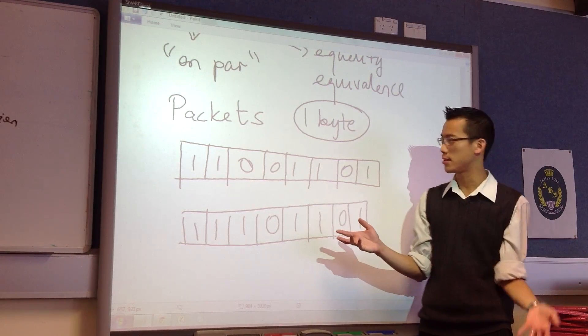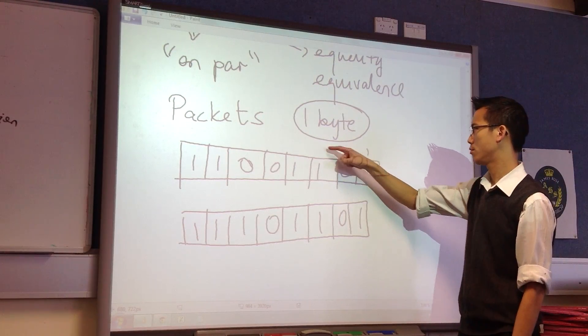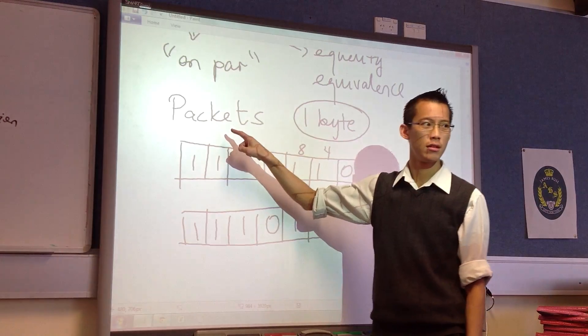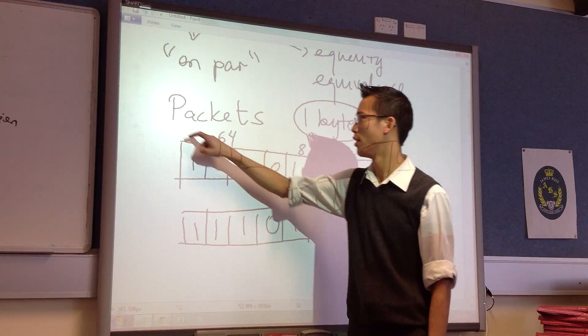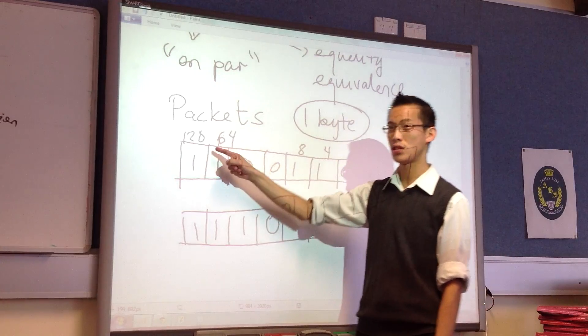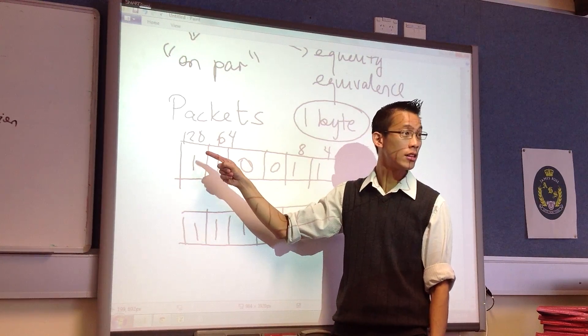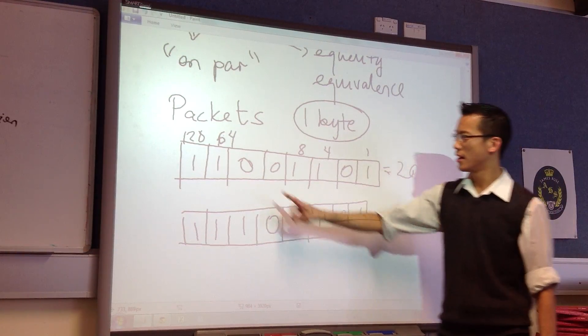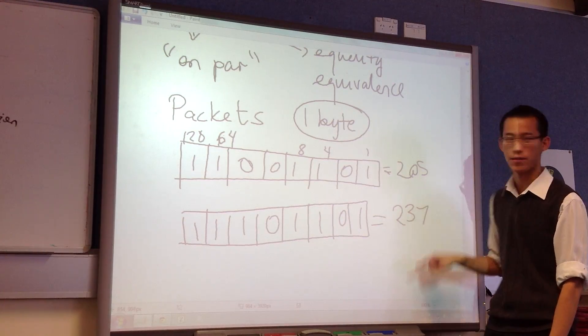What number is this? This is 1, 2, 4, 8, 16, 32, 100 and, sorry wait, down to 64, 64, 128. So this number is actually 5, 13, 77, 205. Whereas this, the difference was a 32, so this is actually going to be 237.